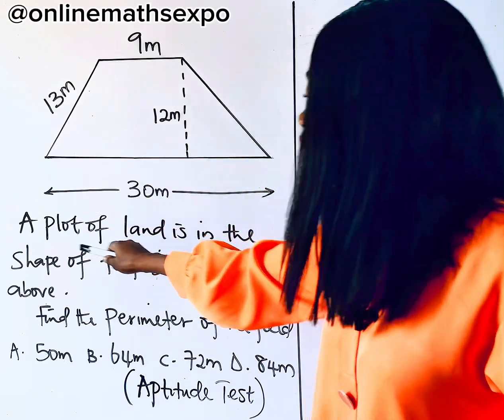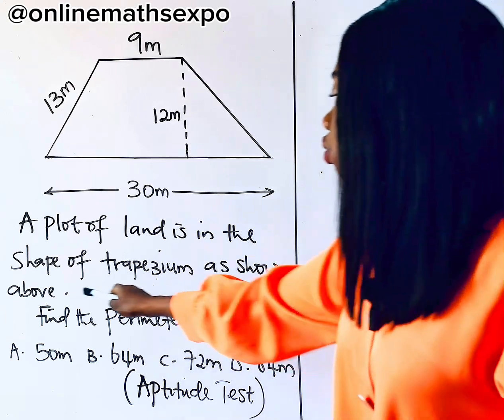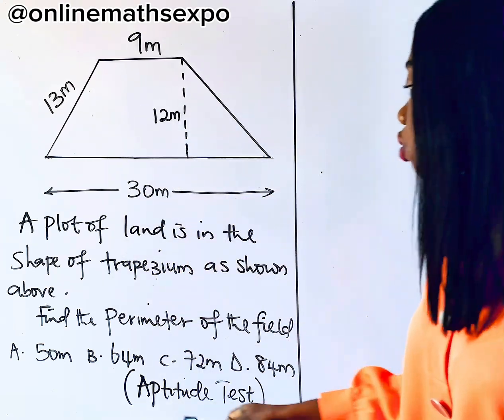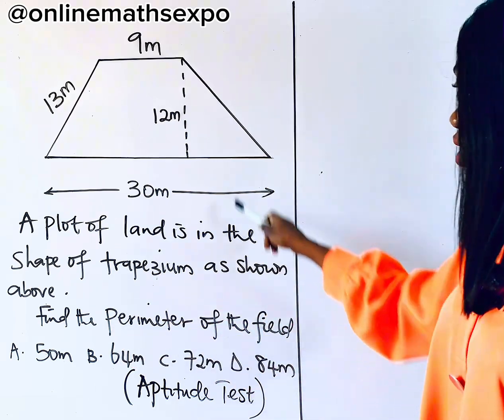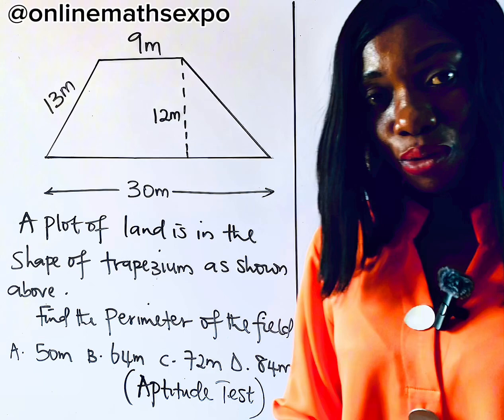Given this diagram, we are told a plot of land is in the shape of a trapezium as shown above. That's how the plot looks like. And we are told to find the perimeter of this field. So these are your options. Which of the options will you go for?